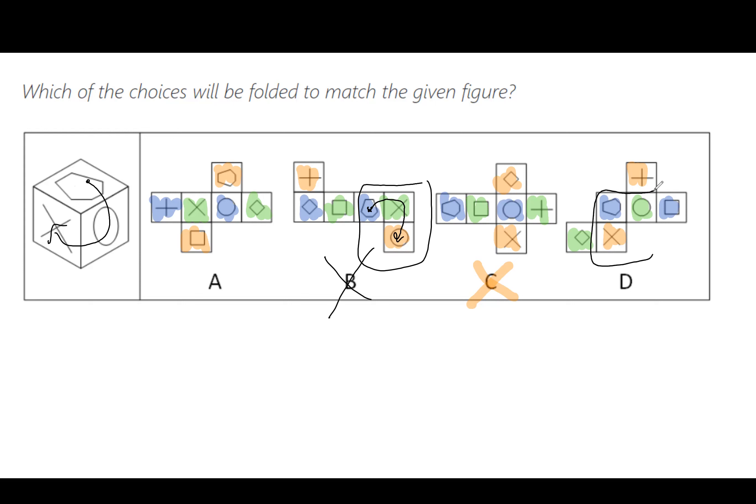Same with this one. If we check it again, it goes hexagon, circle, cross. Then it goes hexagon, circle, cross. So D definitely could also be the correct answer.